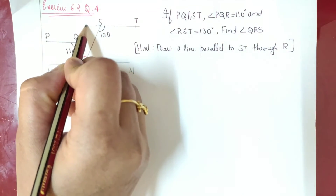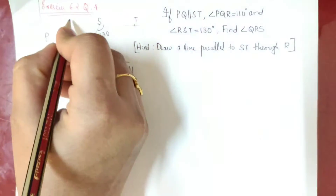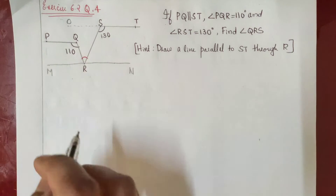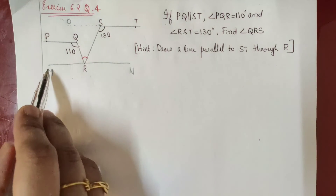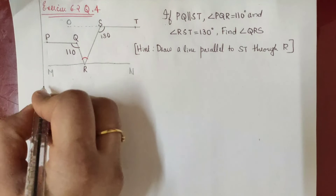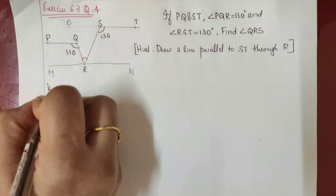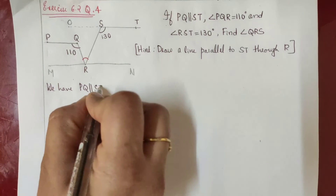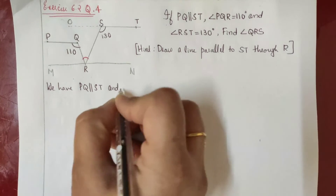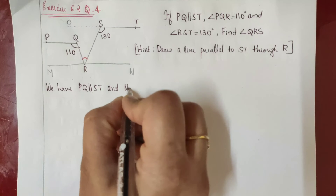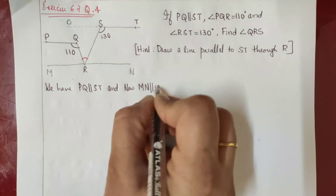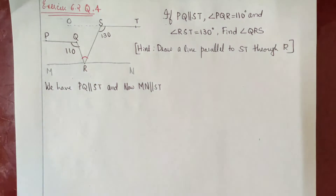Let this extended point be O. Now we have PQ parallel to ST and MN parallel to ST, and also MN parallel to OT.